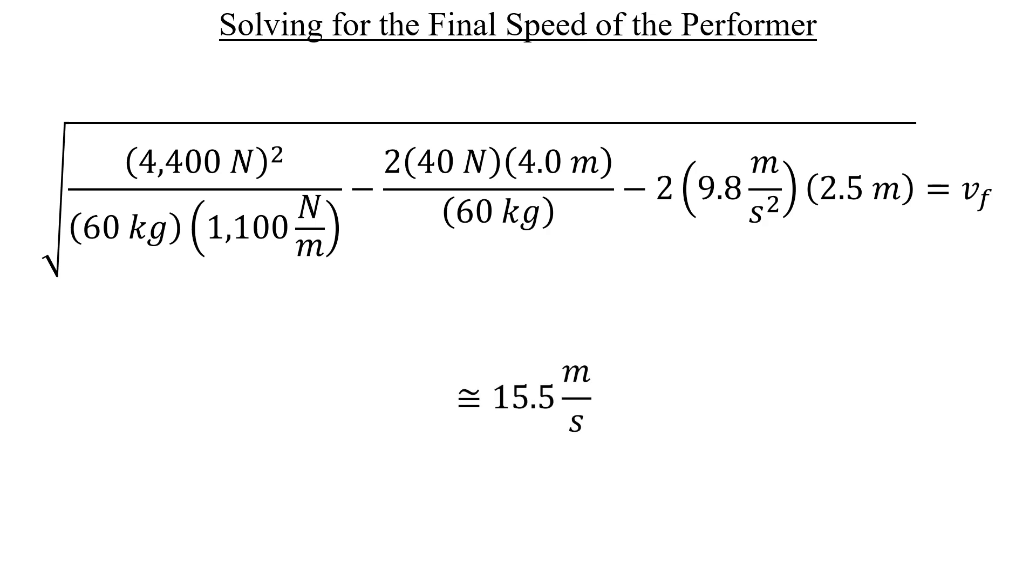Instead of truncating this to the smallest number of significant figures back in the problem description, which would be one, right? Because we have numbers like 40 and 60, which only contain one significant figure.